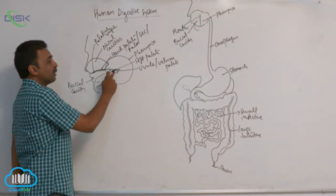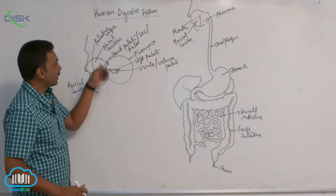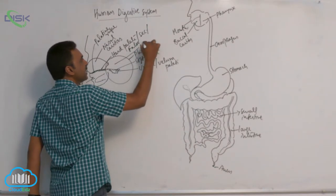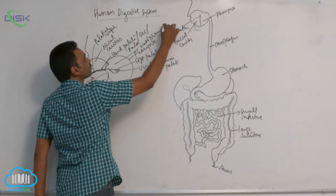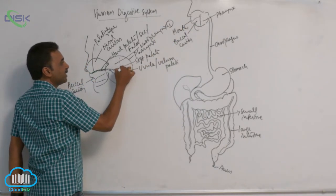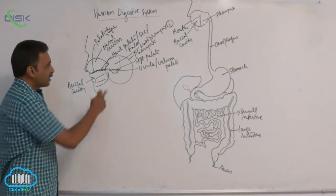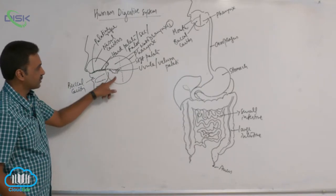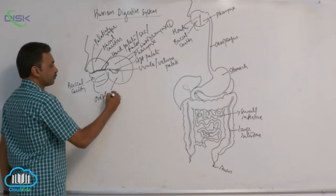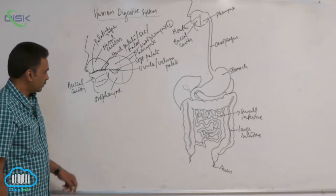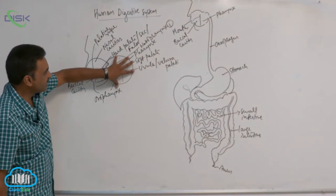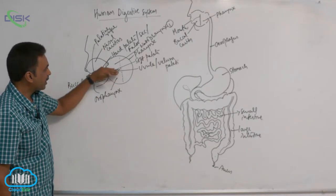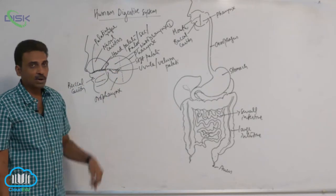The part of the pharynx above the uvula and above the soft palate is called the nasopharynx. The part of the pharynx beneath the soft palate is called the oropharynx.